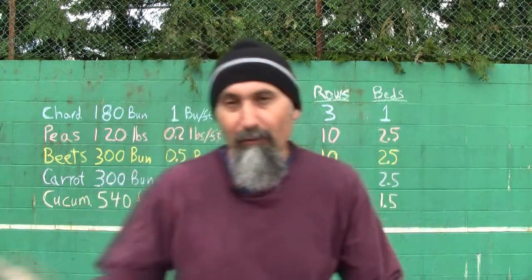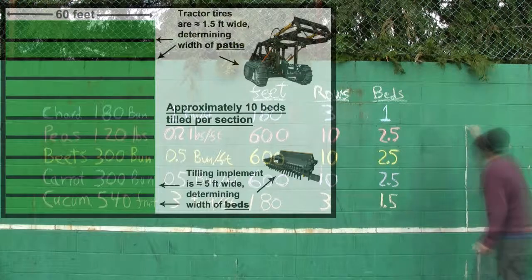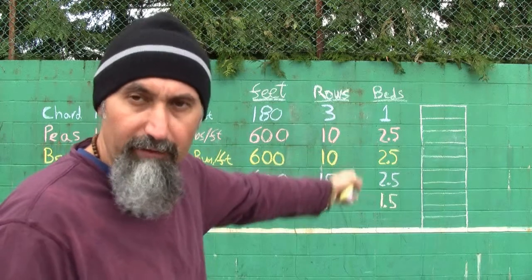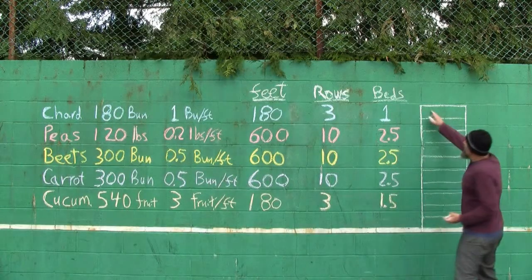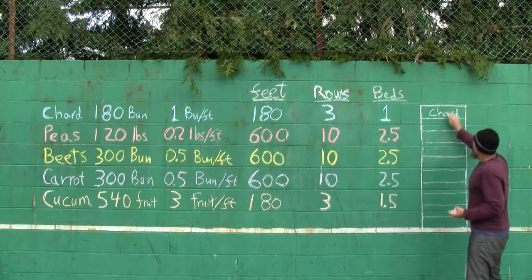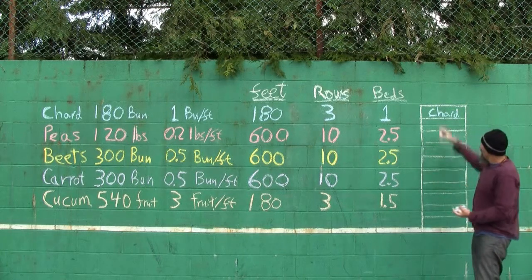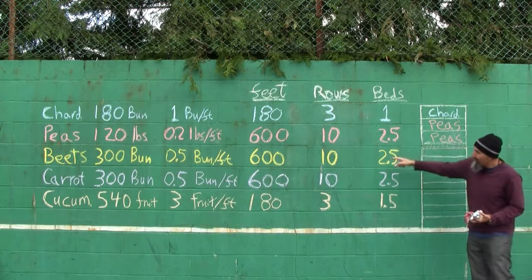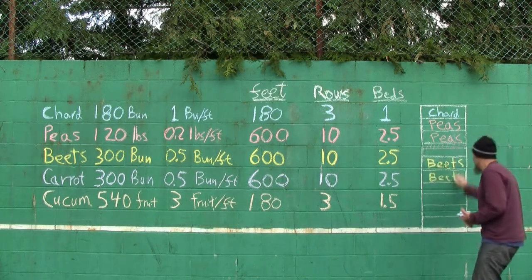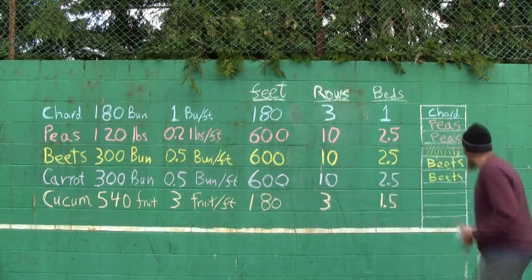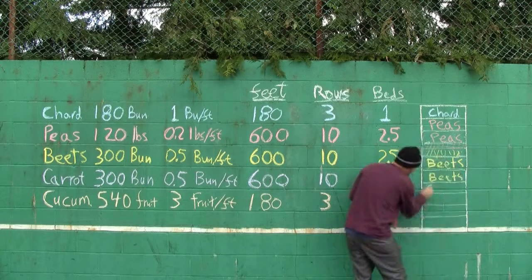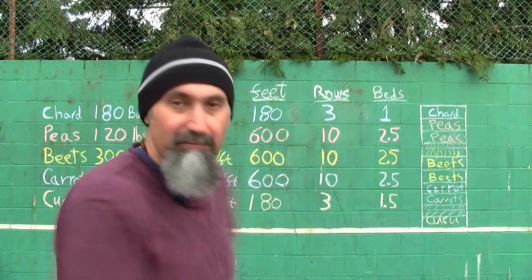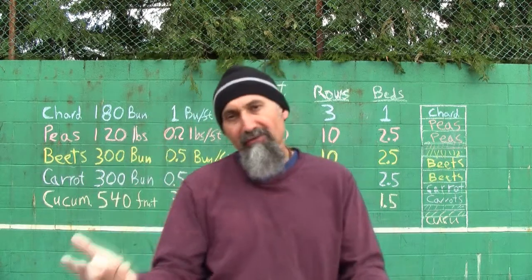Now we can draw our section. Starting with a blank slate, we fill in the space with the number of beds per crop: one bed of chard, two and a half beds of peas, two and a half beds of beets, two and a half beds of carrots, and one and a half beds of cucumber. We color each area by crop to get a nice visual of exactly what our field is going to look like.